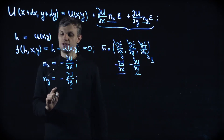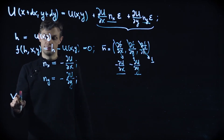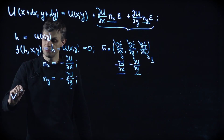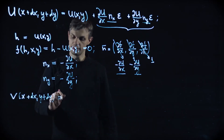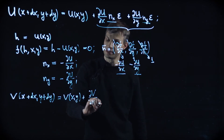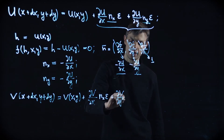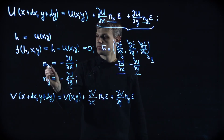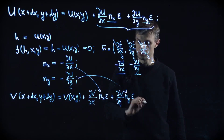Now let's figure out what this direction means for the v function, because we want the imaginary part v to change as little as possible — ideally staying unchanged. So v of x plus dx, y plus dy equals v of x, y plus dv/dx times dx plus dv/dy times dy. We substitute nx equals minus du/dx and ny equals minus du/dy into the expression.